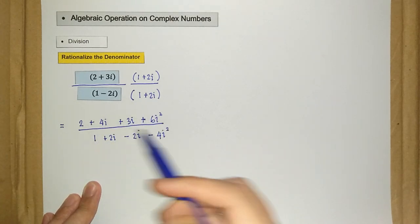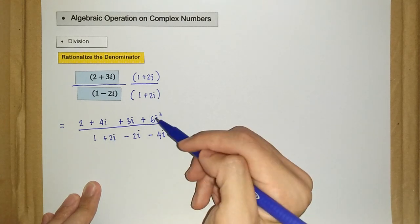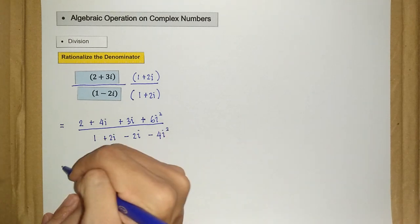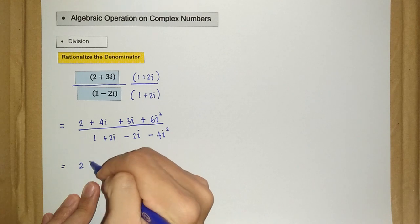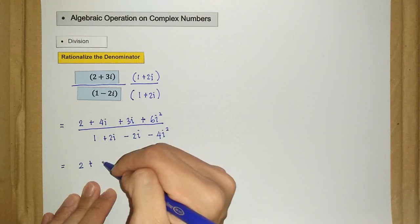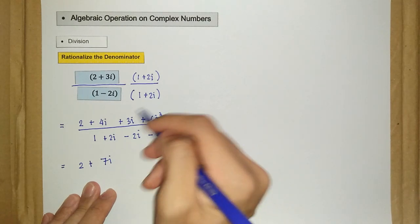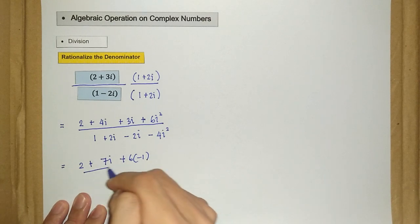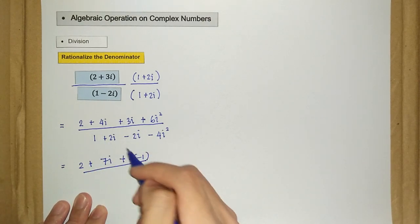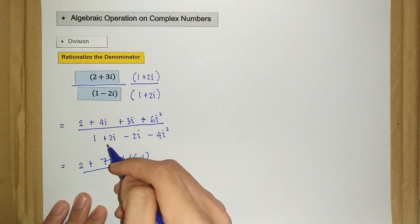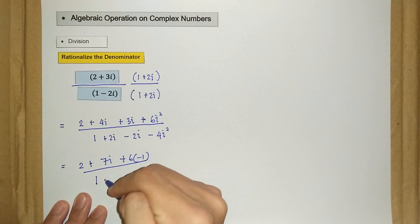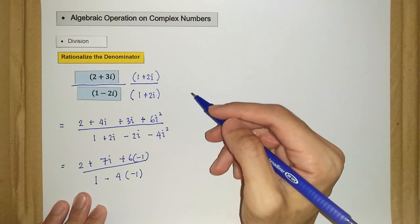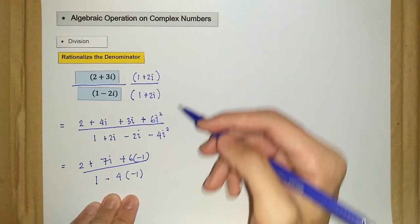Now we simplify using i squared equals negative 1. For the numerator: 2 plus 4i plus 3i gives 7i, and 6i squared becomes 6 times negative 1, which is negative 6. For the denominator: 2i minus 2i cancels to 0, and we have 1 minus 4 times negative 1.